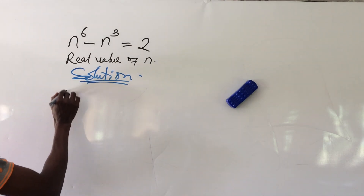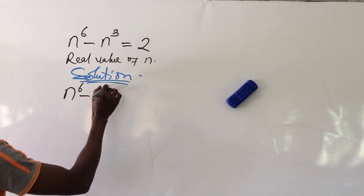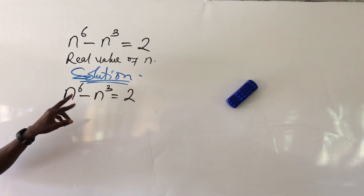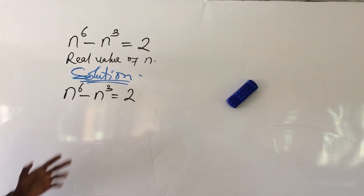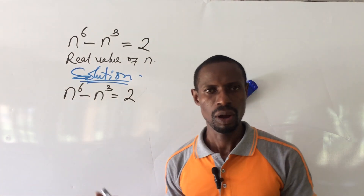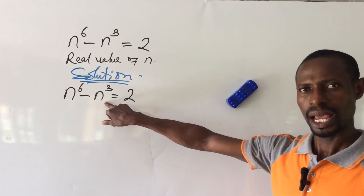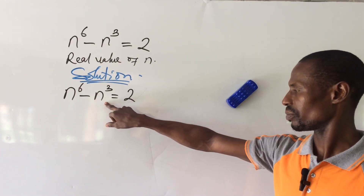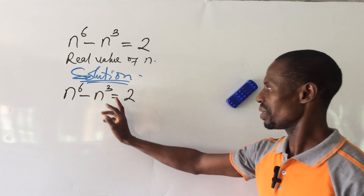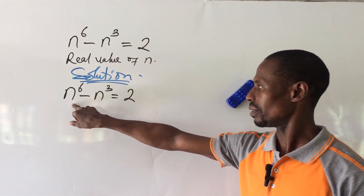So we take our problem: n to the power of 6 minus n to the power of 3 equal to 2. This is a polynomial. In solving this algebra for the real solution, this term has the smallest exponent, which is to the power of 3.